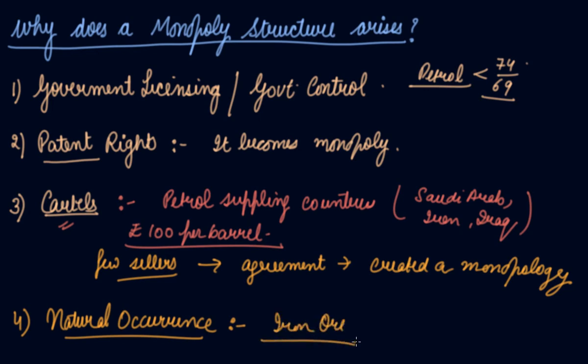You decide to open a factory there, you register that area under your name, and you start the factory there. That is natural occurrence. Now you have a monopoly in that particular area because that resource has come to you naturally.